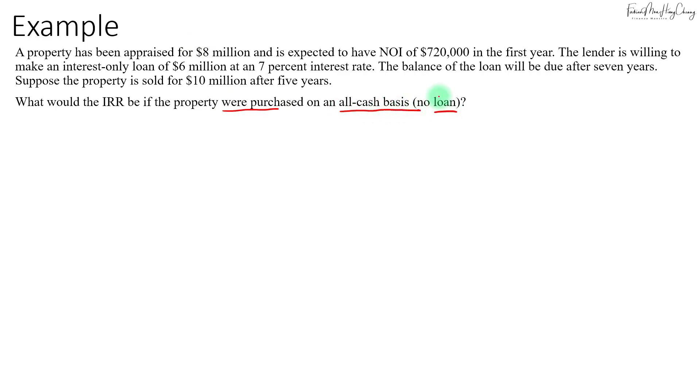Now what if the property were purchased on an all-cash basis with no loan? If no loan were taken, then at time zero the investor will have to come up with the entire $8 million to buy the property.